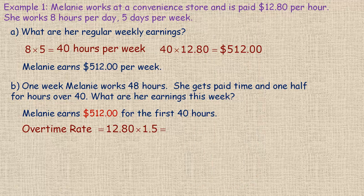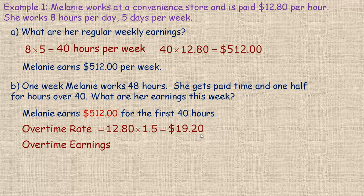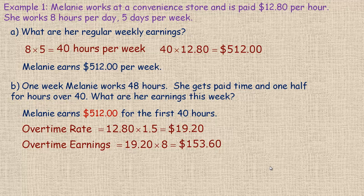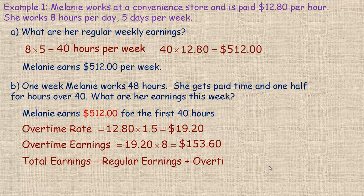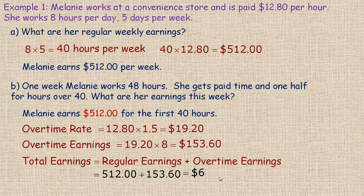Taking $12.80 times 1.5, she's making $19.20 per hour for the overtime work. For the eight hours of overtime, we multiply $19.20 by 8, giving $153.60. Her total earnings are the regular $512 plus the overtime $153.60, which adds up to $665.60.